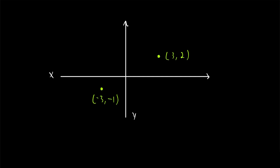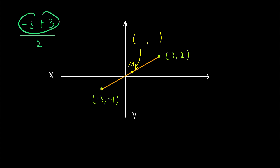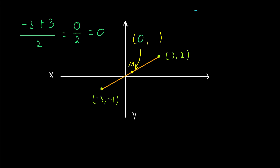Let's quickly run through one more example. Now we've got the points negative 3, negative 1 and 3, 2. Let's draw this segment connecting them and find the midpoint M. To find the x-coordinate, we average the x-coordinates: negative 3 plus 3 divided by 2. Negative 3 plus 3 equals 0, so this is 0 divided by 2, which equals 0. The x-coordinate of the midpoint is 0. To find the y-coordinate, we average the y-coordinates: negative 1 plus 2 divided by 2. Negative 1 plus 2 equals positive 1, so this equals one half. The y-coordinate of the midpoint is one half, giving coordinates 0, one half.